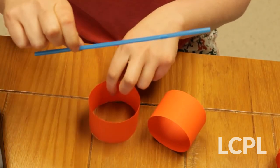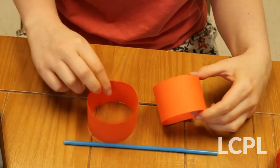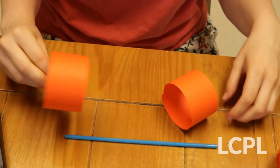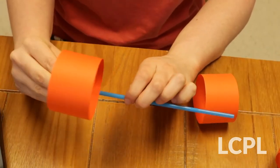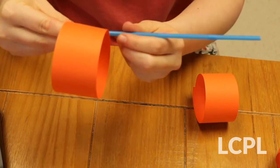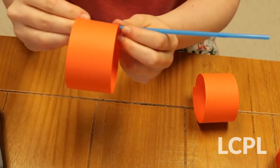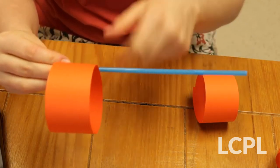Now this is where the straw comes in. The straw is going to be the body of our airplane, so you're going to want to make it so that the circles for your paper airplane are perpendicular to the straw. That means that the circle is sitting at a 90-degree angle from the straw.